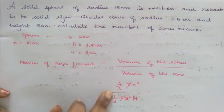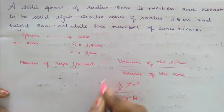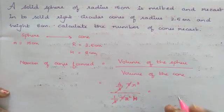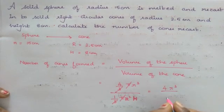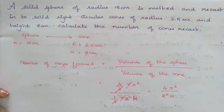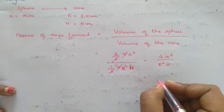So now pi and pi gets cancelled. This is 4 by 3, 1 by 3. So 3 in the denominator of this numerator function gets cancelled. So this is 4 by r cube by r square h. Now let's substitute.